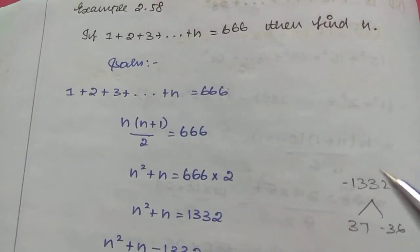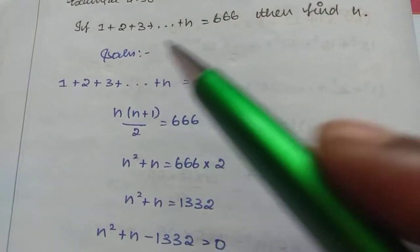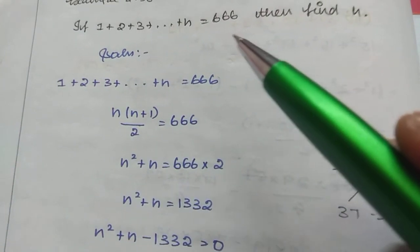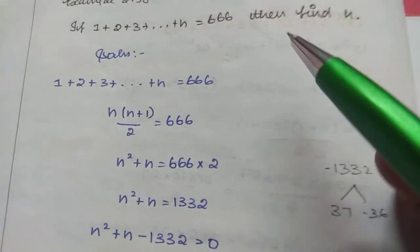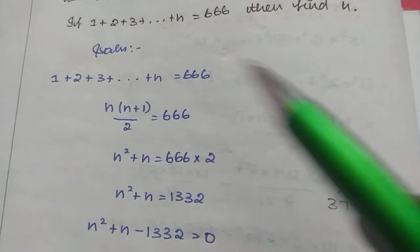Good morning. Example 2.58: If 1 + 2 + 3 + ... + n = 666, then find the value of n.